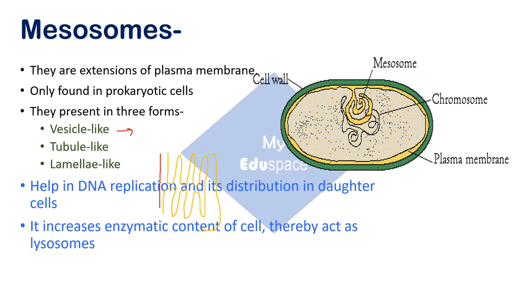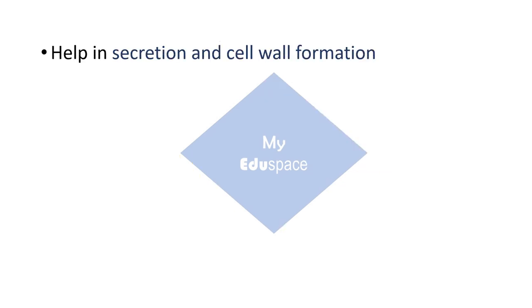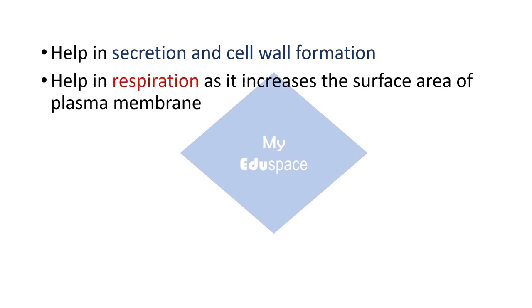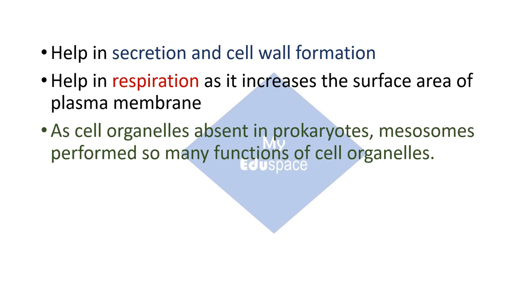Functionally, mesosomes help in DNA replication, or doubling of DNA content, during cell division. They increase the enzymatic content of the cell. They also act similarly to lysosomes present in eukaryotic cells, meaning mesosomes contain enzymes and therefore help in the breakdown of macromolecules. Mesosomes also help in secretion and in cell wall formation. They help in respiration by increasing the surface area of the plasma membrane, as mesosomes are sites of respiratory activity and contain respiratory enzymes.